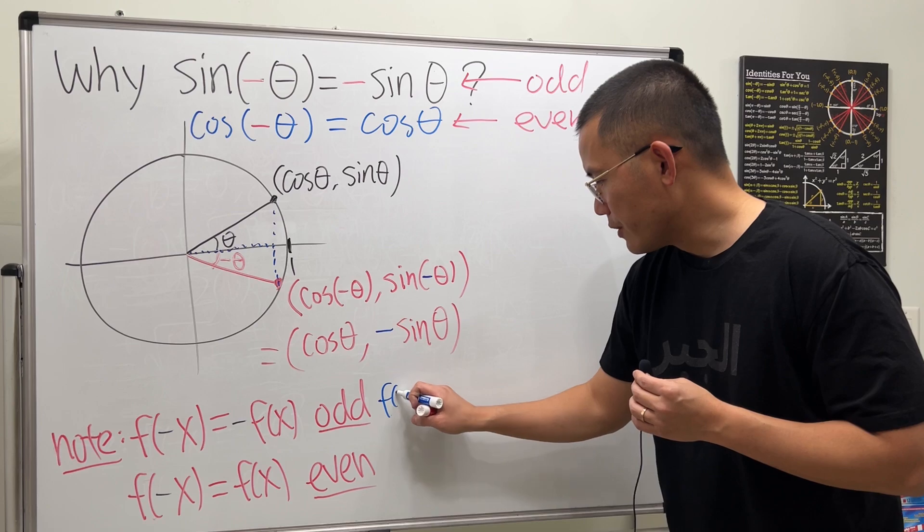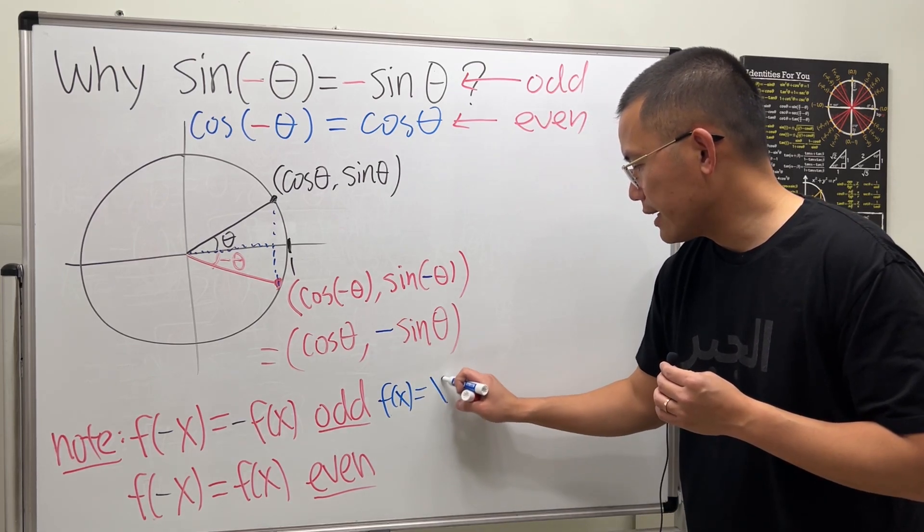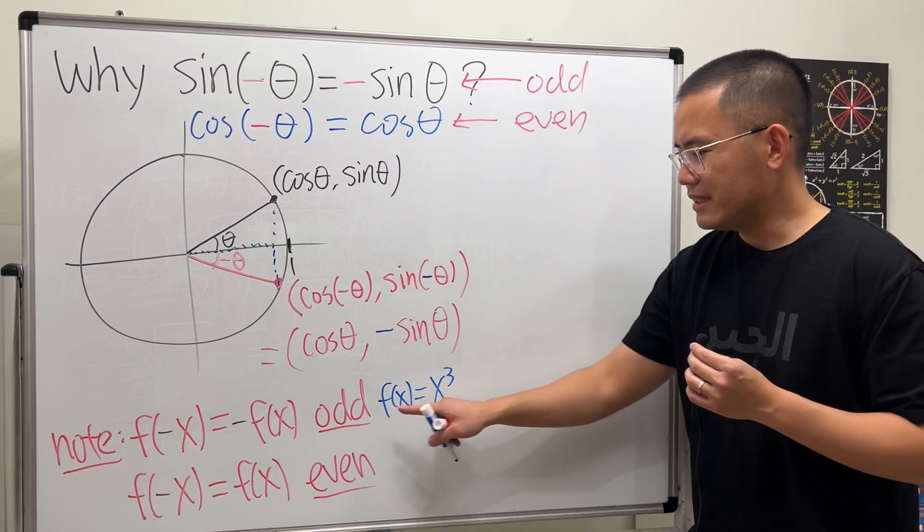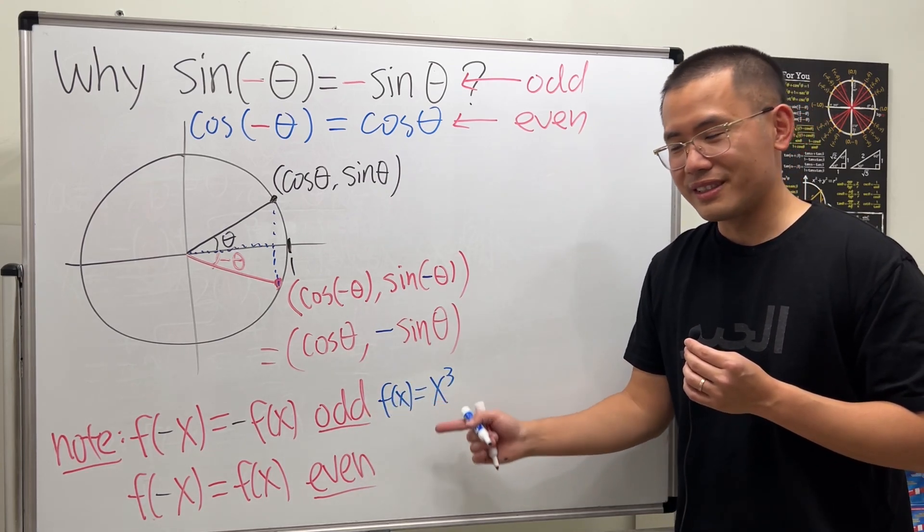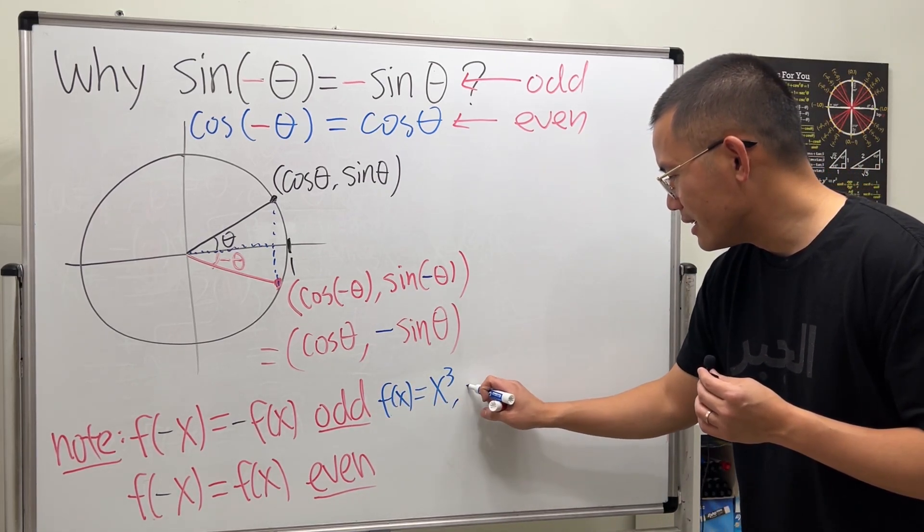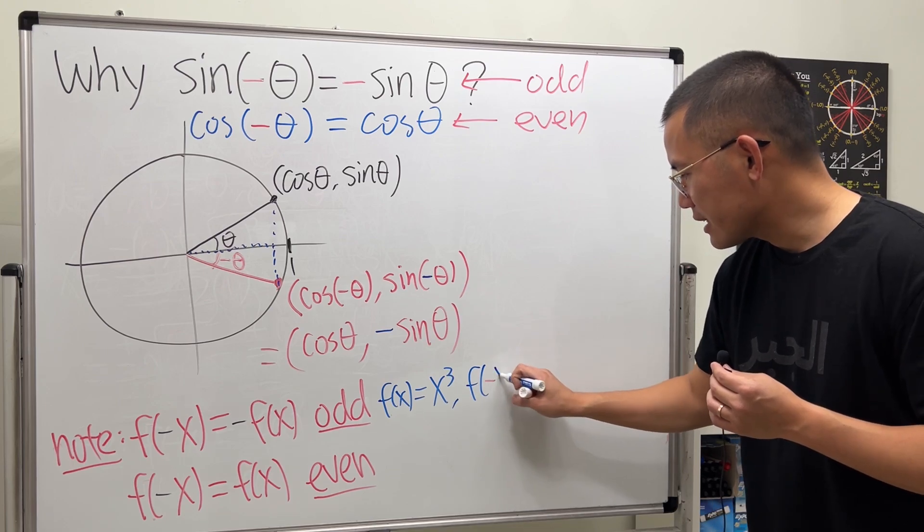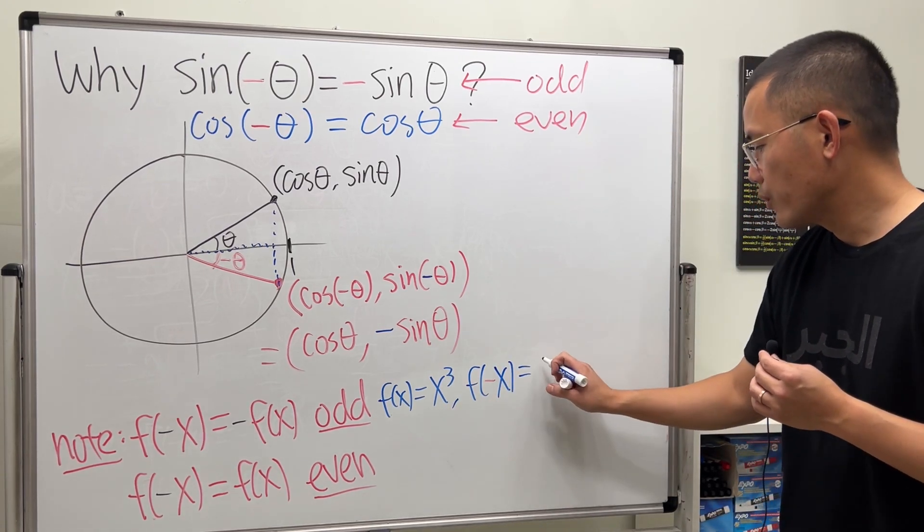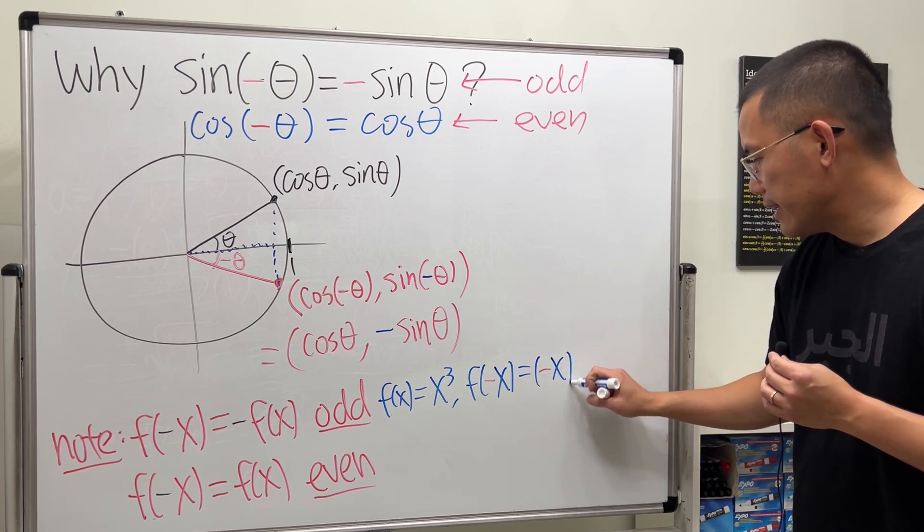And I would like to give you another example for an odd function. Let's say if we have x to the third power. When you have a power that's odd, yeah, that makes perfect sense is the odd function. It's odd because this f of negative x, you put negative x into x right here,